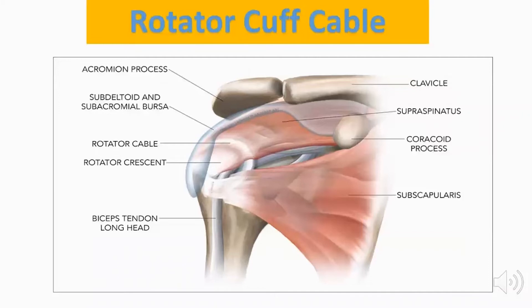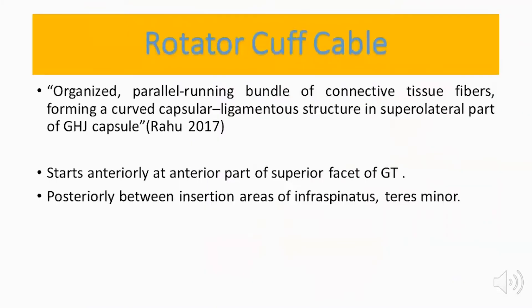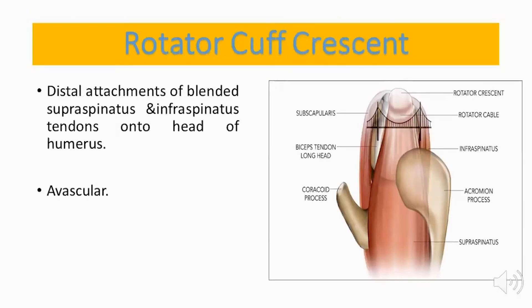Another point in the anatomy is the rotator cuff cable — an organized parallel-line bundle of connective tissue thickening forming a curved capsular structure on the superior lateral aspect of the glenohumeral capsule. It starts anteriorly at the anterior part of the superior facet of the greater tuberosity and extends posteriorly between the insertion areas of the infraspinatus and teres minor. Additionally, there is the rotator cuff crescent, which is the distal attachment of the blended supraspinatus and infraspinatus tendons onto the humeral head. This area is avascular and is the most common site for rotator cuff tears.